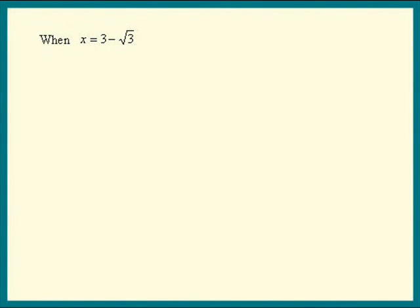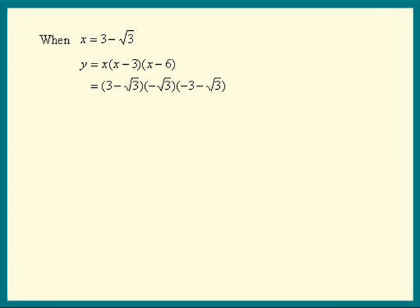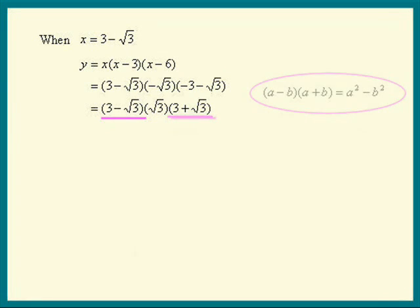Let's move on to find the y-coordinates of these relative extrema. It would be easier to use the factored form of the cubic. So let's plug in the 3 minus square root 3. Here's what we have. Let's simplify this by getting rid of the negative signs from the last two factors. Now look at the first and third factors. They're in the form of a minus b times a plus b. That's a squared minus b squared. 9 minus 3, which is 6. So the y-coordinate is 6 square root 3 for that point.